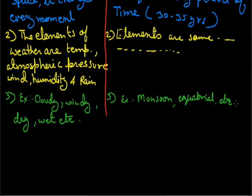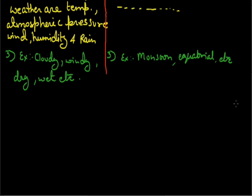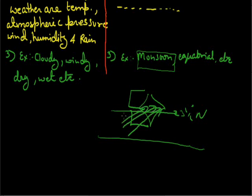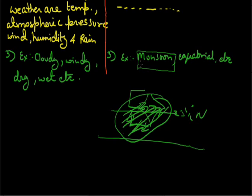This is how we differentiate the terms weather and climate. The climate of India is monsoon. Why is India's climate called monsoon? Because half of India lies in the torrid zone and half in the temperate zone, and for six months the southwest monsoon winds run from southwest to northeast. In the remaining six months, these winds go in the opposite direction, from northeast to southwest. So the whole year we see only monsoon winds flowing in India.